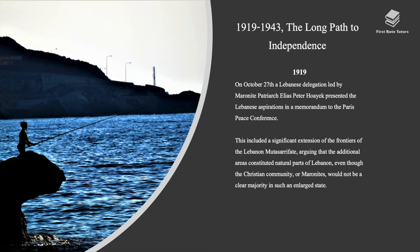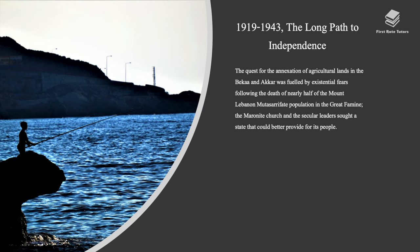In 1919, on October 27th, a Lebanese delegation led by the Maronite patriarch presented Lebanese aspirations in a memorandum to the Paris Peace Conference. This included a significant extension of the frontiers of the Lebanon Mutasarifate, arguing that the additional areas constituted natural parts of Lebanon, even though the Christian community or Maronites would not be a clear majority in such an enlarged state. The quest for annexation of agricultural lands in the Bekaa was driven by existential fears following the death of nearly half of the Mount Lebanon Mutasarifate population in the Great Famine.